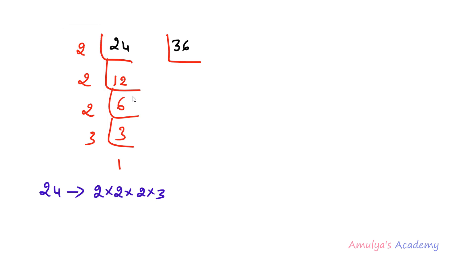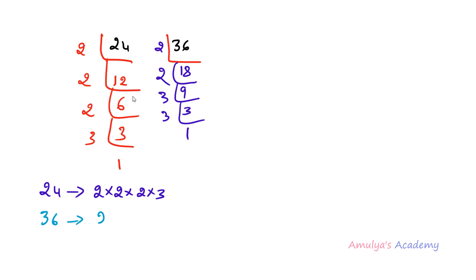Now I will do the same thing with 36. We can see the prime factors of 36 are 2 × 2 × 3 × 3. First we divide the number, then we write down the prime factors of both numbers.